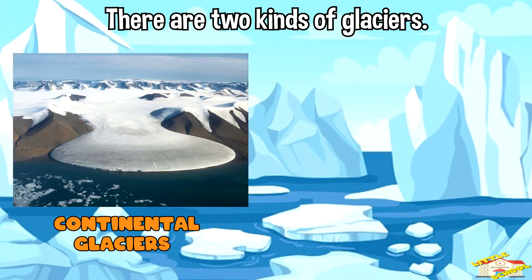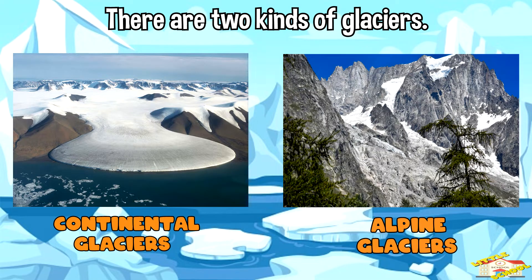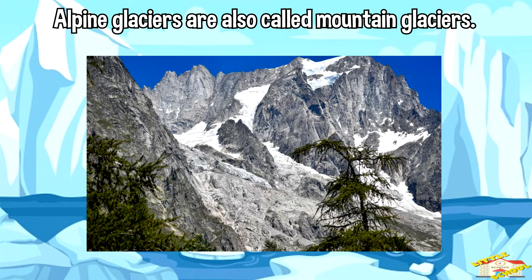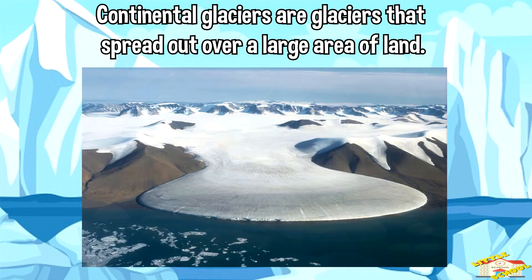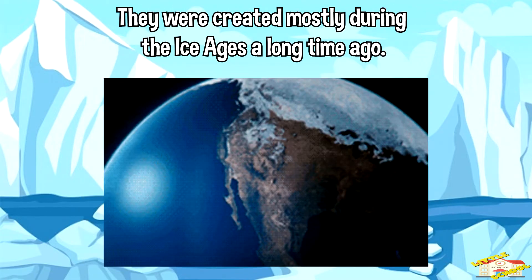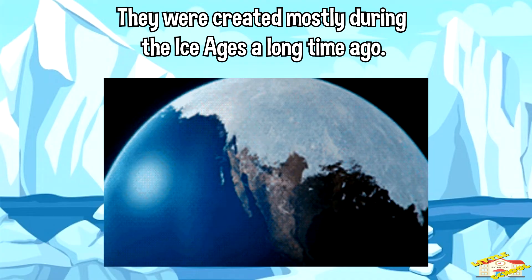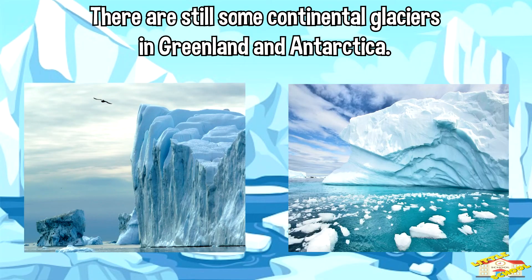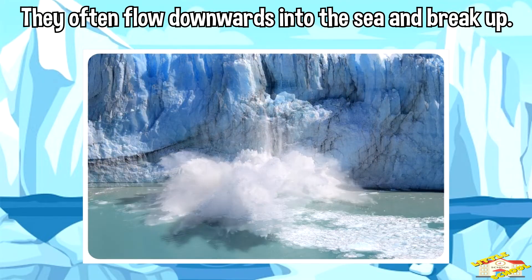There are two kinds of glaciers: continental glaciers and alpine glaciers. Alpine glaciers are also called mountain glaciers. Continental glaciers are glaciers that spread out over a large area of land. They were created mostly during the ice ages a long time ago. There are still some continental glaciers in Greenland and Antarctica.